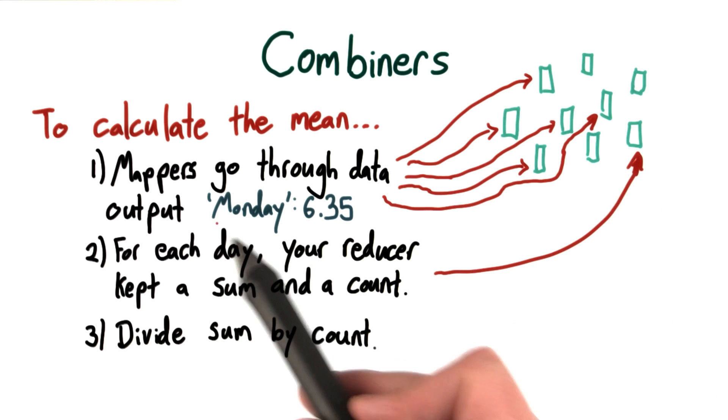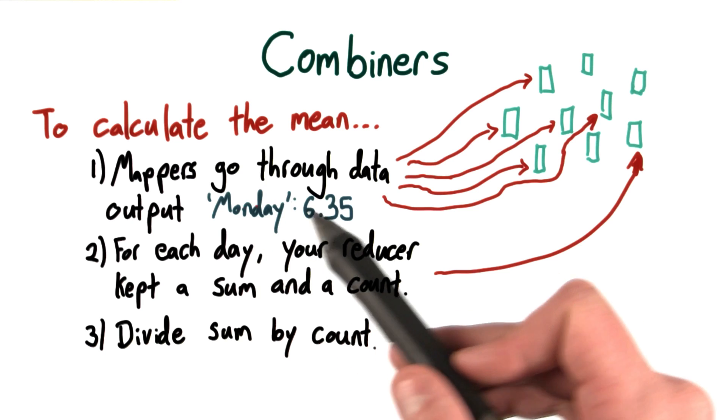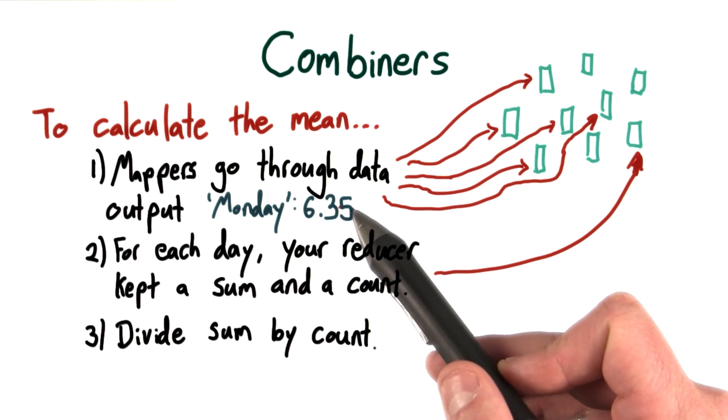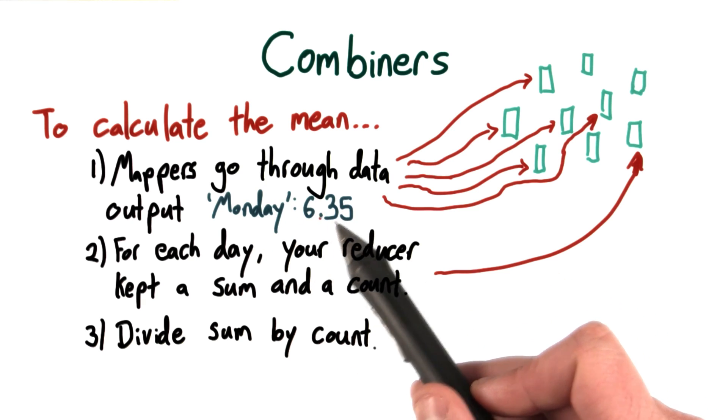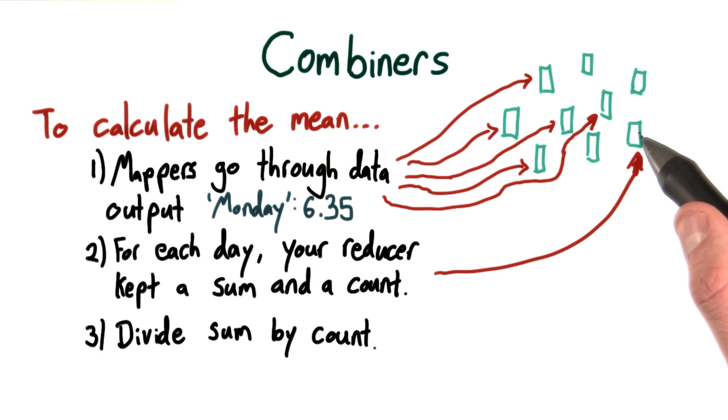Because if there's a lot of data, even if each individual output was simply a day and a number, depending on the number of records we have, transferring all of this data to this machine where the reducer lived, that's a lot of bandwidth. That's going to be a lot of traffic on our network that we don't necessarily want and that it doesn't actually seem like we need to have.